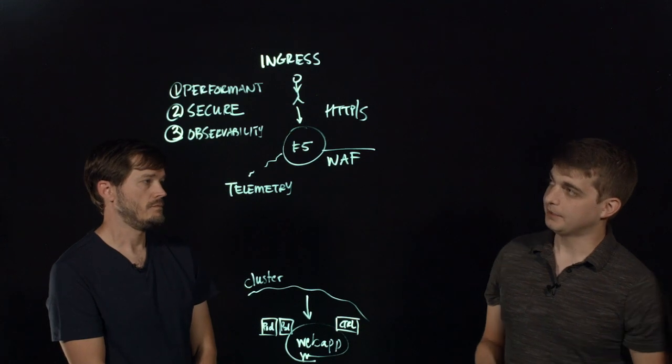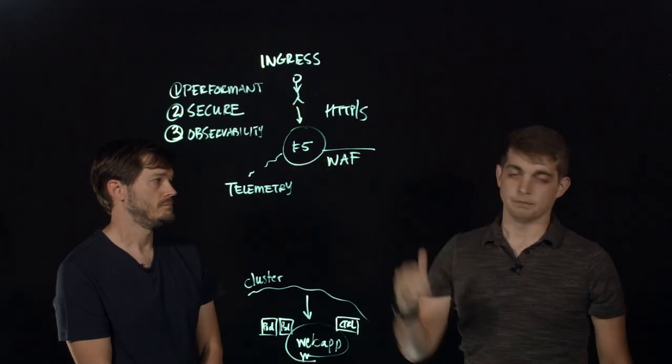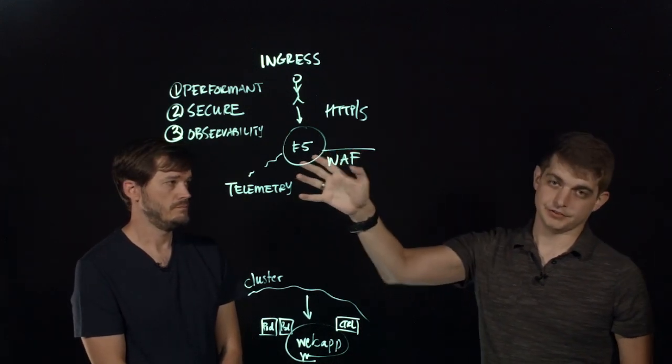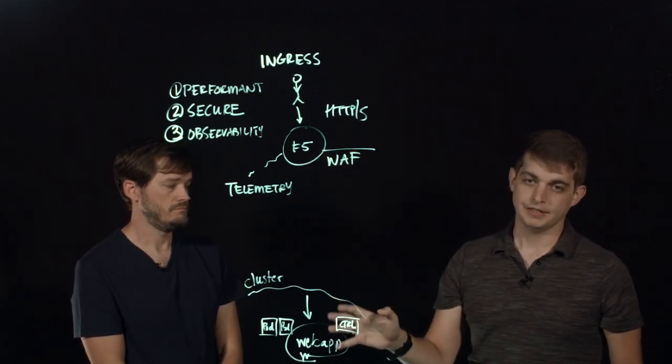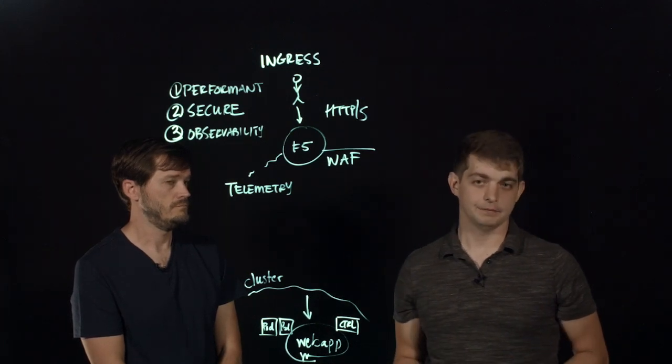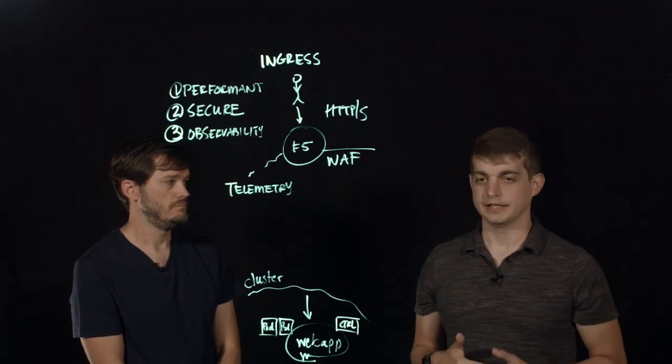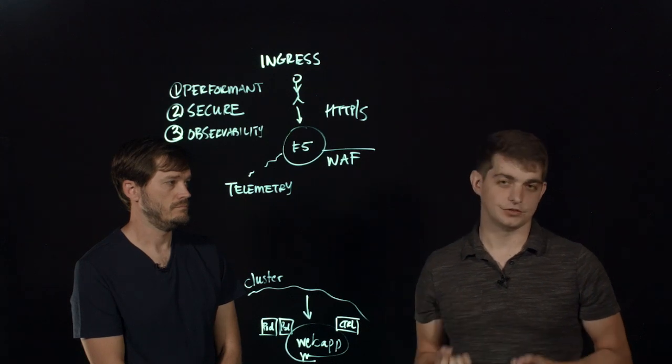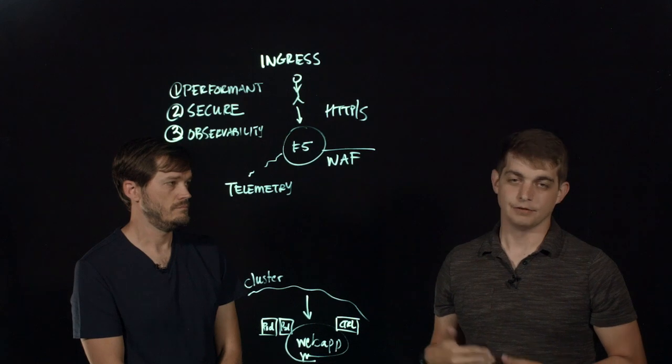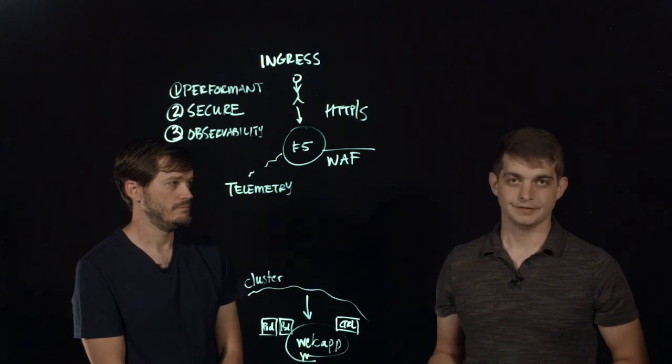So that being said, the big requirements around performance, security, and observability, this is really what F5 gives us in conjunction with OpenShift. And if this is something that you're interested in, there's a lab at the very bottom of this YouTube page that gives you information around how you can get access to an on-demand lab to experience these different use cases in real time on your own machine. Thank you.